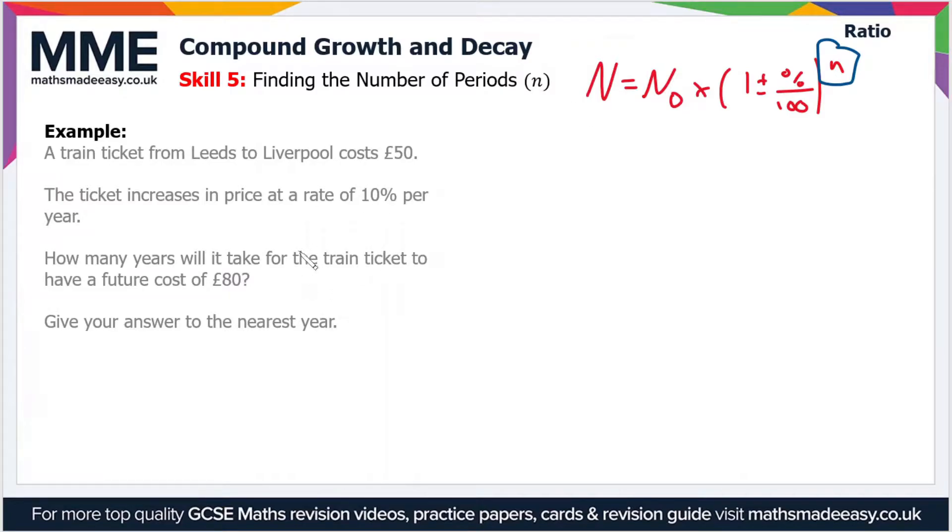So let's put these values into the formula. First of all, we're looking for the amount of years it'll take to have a future cost of £80, so the amount after that time period is going to be 80. And then our original amount N naught is 50, and then it's times one plus in this case because we're dealing with a price increase.